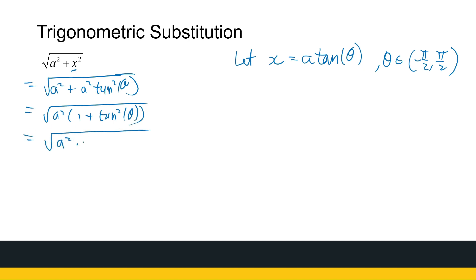So that's the root of a squared times sec squared theta. So that gives me the absolute value of a times the absolute value of sec theta. And sec theta is positive in that interval, so that's the absolute value of a times sec theta. All right, so that's the second one we're going to use.